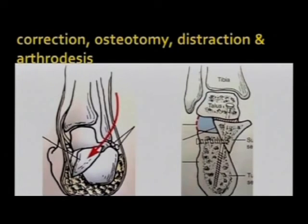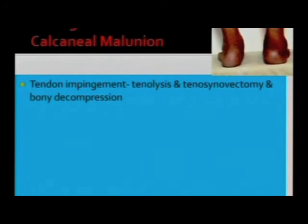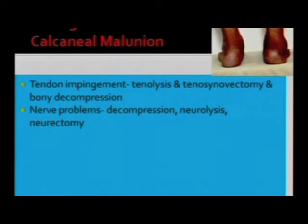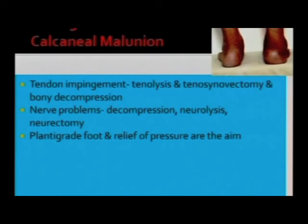Romance described a method where he goes through the old fracture, makes an osteotomy, distracts, and performs arthrodesis — though I do not have personal experience with this. For tendon impingement, you will need to do tenolysis, tenosynovectomy, and bony decompression. For nerve problems, you need decompression, neurolysis, and sometimes neurectomy, but achieving a plantigrade foot and relief of pressure are the aims for success.